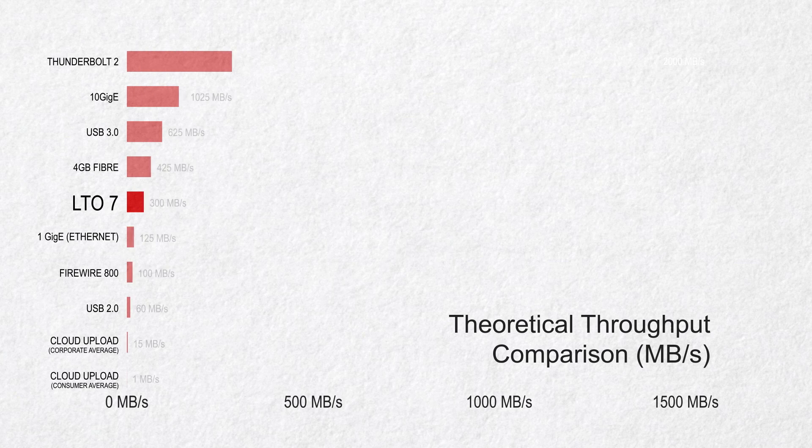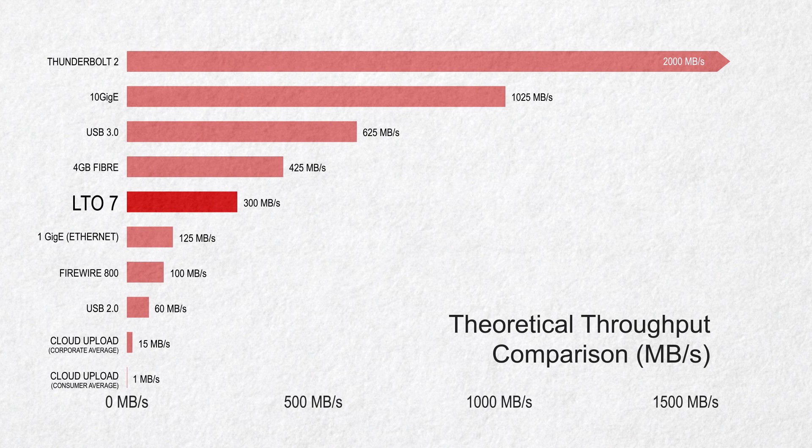When we look at read and write times, LTO7 has a theoretical max speed of 300MB a second. This is much faster than USB 2.0 and any flavor of FireWire, as well as almost 3 times faster than standard office Ethernet connections. Even though it's twice as fast as the last-gen LTO6, it's becoming less impressive with newer computers coming stock with USB 3.0 and Thunderbolt, but it still smokes your few megabytes a second up to the cloud.